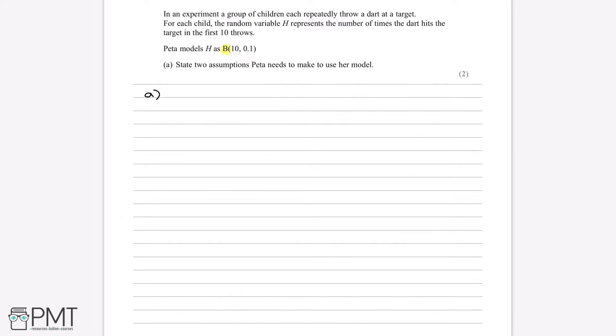We've said that p is 0.1, so this has to be fixed. In the context of the question, what this means is that the probability of a dart hitting the target - because that's what we define as success in this context - must be constant, regardless of which child it is or which number throw it is.